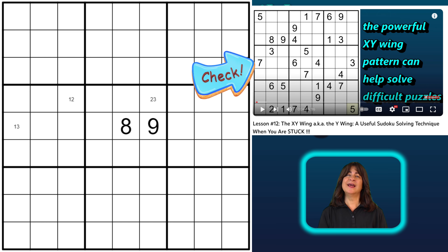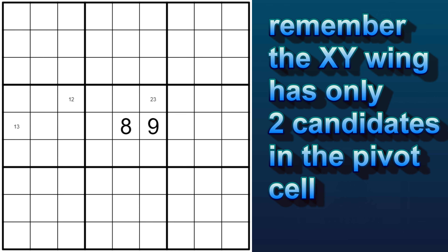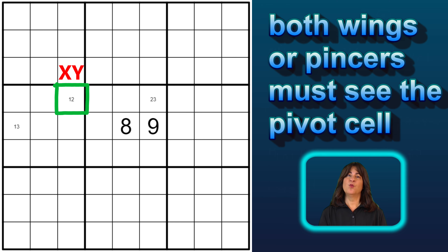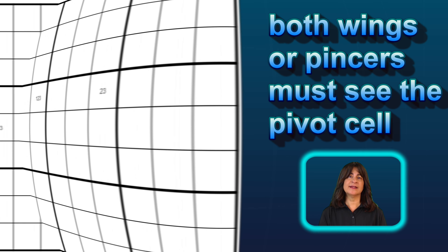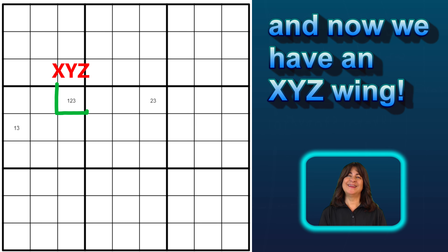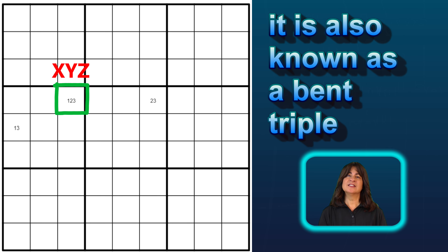But now let's move on to the XYZ wing. Notice how the pivot in the XY wing has two candidates. Well, now let's add a third candidate, and now we have an XYZ wing. Some people call this a bent triple — it's the same thing.